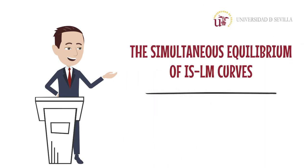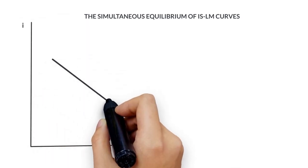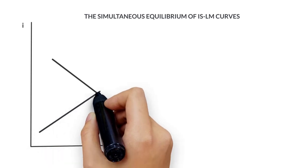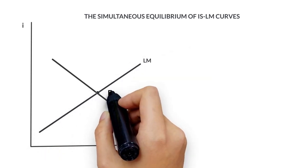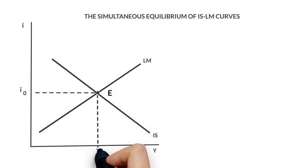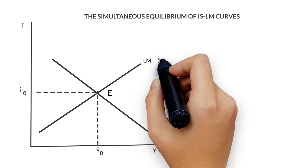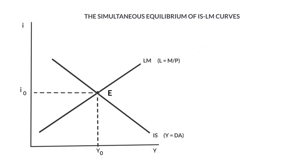The simultaneous equilibrium of IS-LM curves. The simultaneous equilibrium in the goods and money markets is obtained where the IS and LM curves cross each other, obtaining an equilibrium point E for an interest rate I0 and an income level Y0. For this point, the goods market is in equilibrium. Therefore, income equals the aggregated demand. Moreover, the money market is also in equilibrium. Thus, the money demand equals money supply.